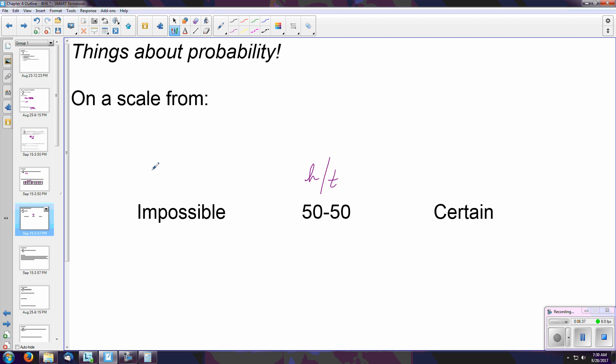Impossible probability is something that can never happen. And if it can never happen, then the probability that it occurs is equal to zero.